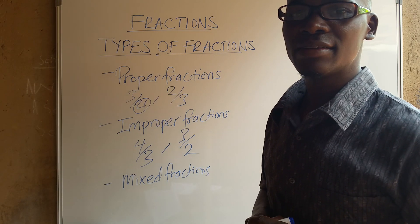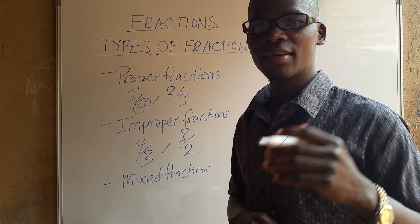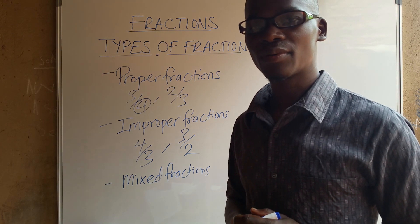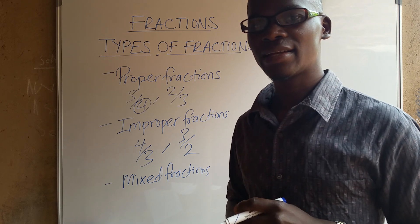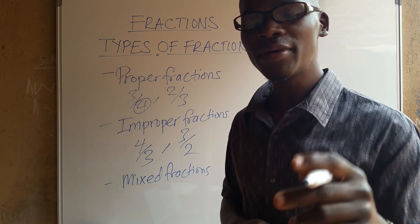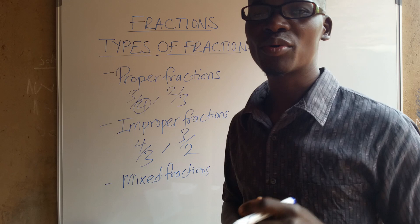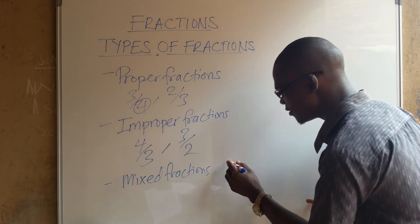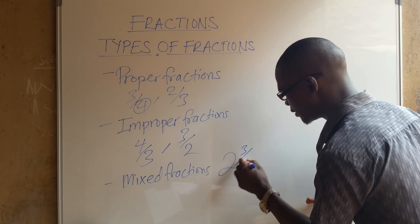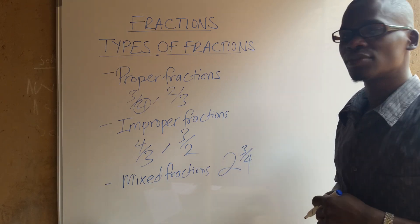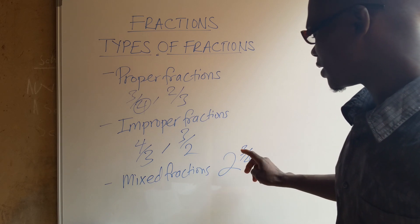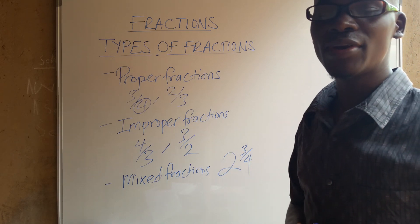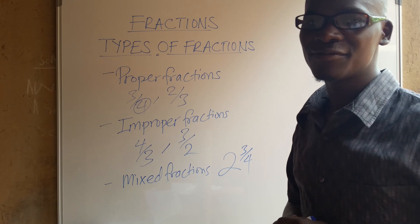The last type is the mixed fraction. A mixed fraction is a fraction with two parts: a whole number and a proper fraction. For example, 2 and 3/4. A fraction with a whole number and a proper fraction is known as a mixed fraction.